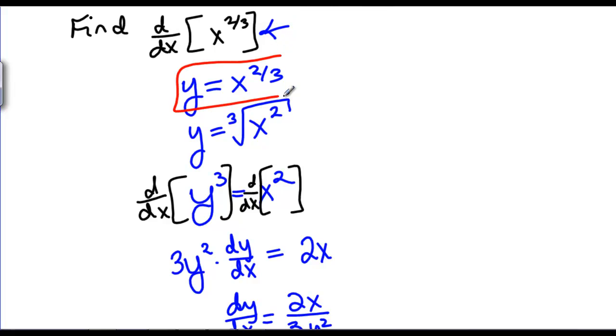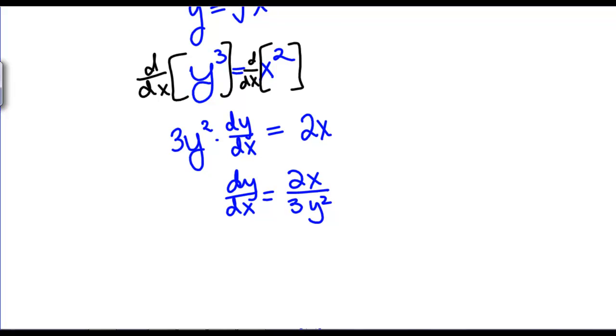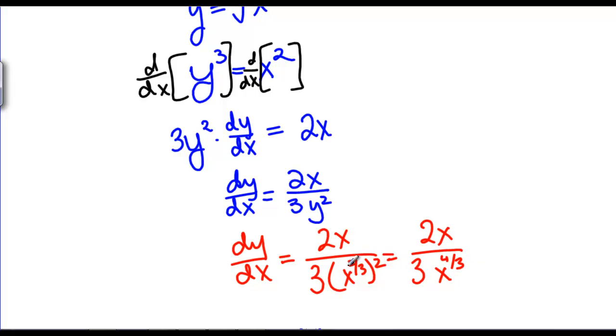We're going to use our relationship here that Y equals X to the 2/3. So we're going to have dY/dX equals 2X over 3X to the 2/3 squared, which simplifies to 2X over 3X to the 4/3, so we're multiplying 2/3 times 2. Which simplifies to 2/3 X to the negative 1/3 because we're subtracting X to the 1st minus X to the 4/3. So X to the 1st divided by X to the 4/3 is X to the 1st times X to the negative 4/3, and 1 minus 4/3 is negative 1/3.